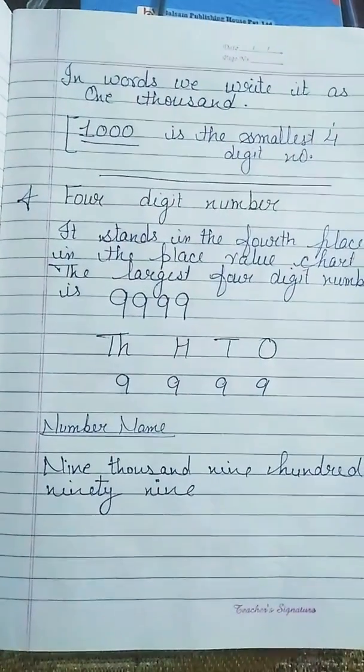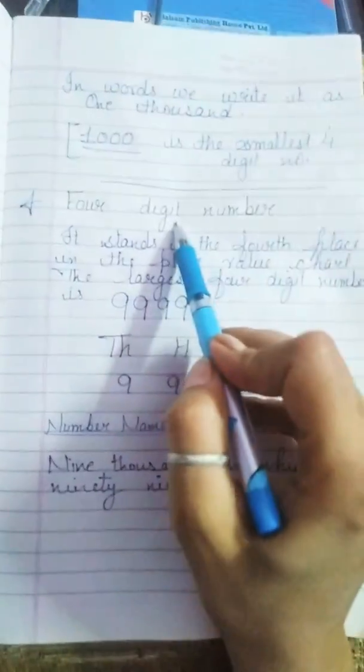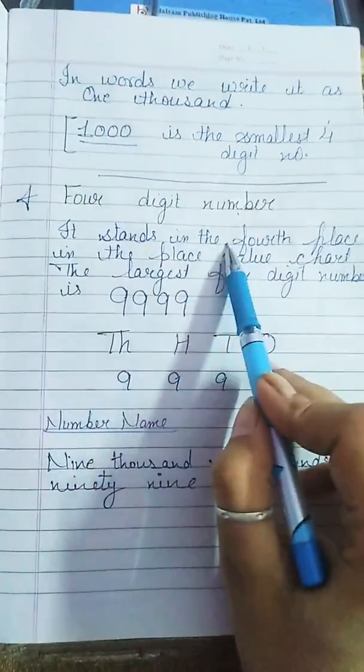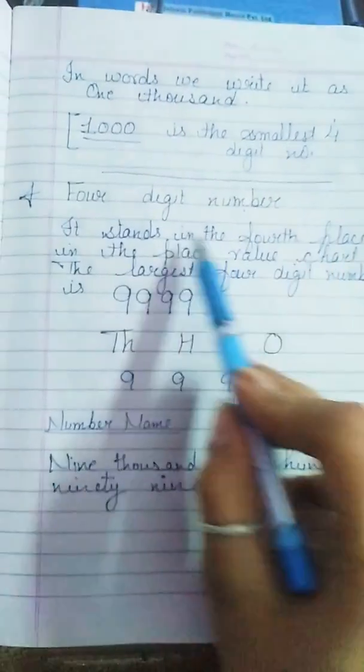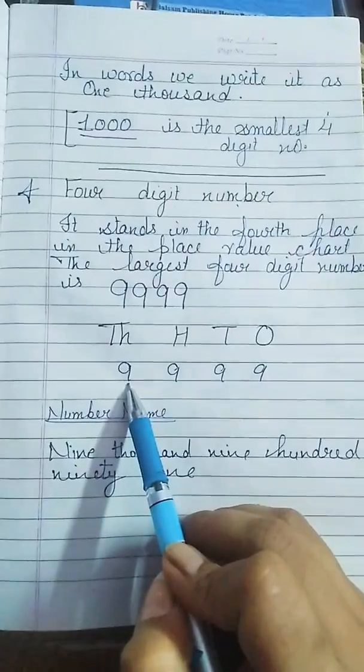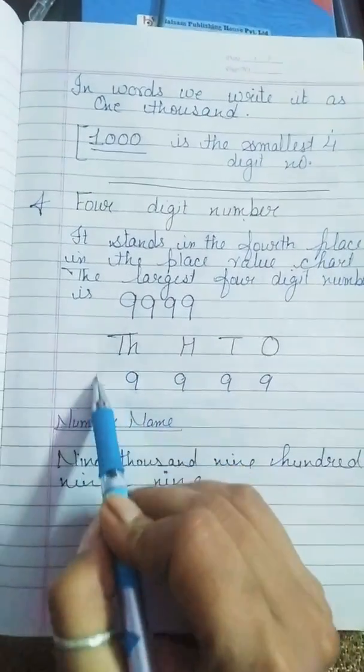Now, 4-digit number. It stands in the 4th place. Jho 4-digit number hota hai, woh 4th place pe stand kata hai in the place value chart. Like it's a place value chart.